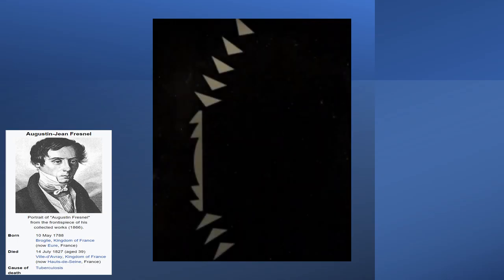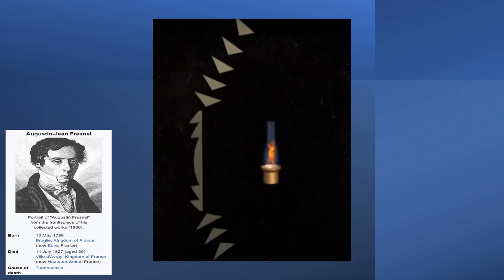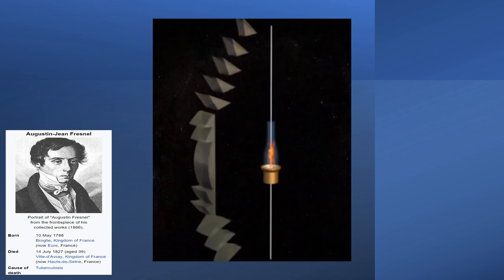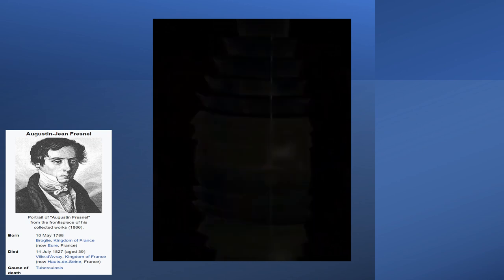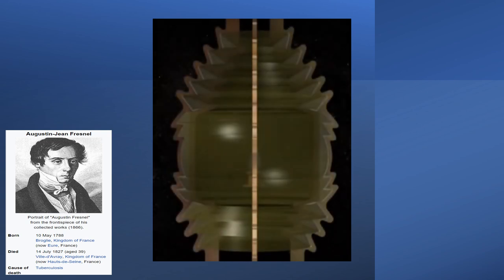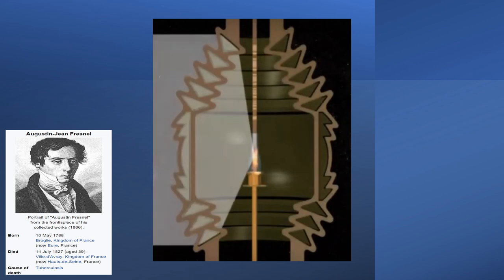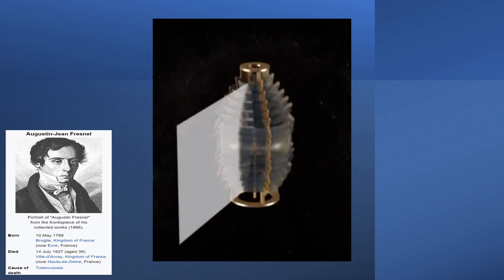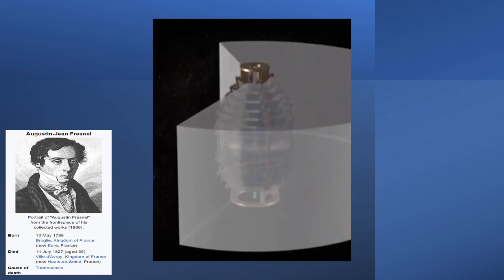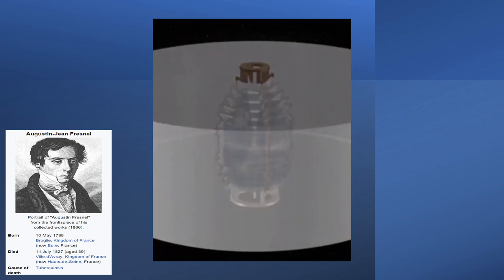Fresnel understood that much of the refraction done by huge lenses could be replaced by a thinner lens with a step design. Each of the steps would bend the light by a certain degree to make the light emerging from the lamp of the lighthouse parallel. Thus Fresnel lenses allowed the construction of lighthouse optics without the huge lenses that were associated with prior lighthouse optics.